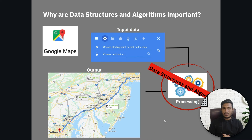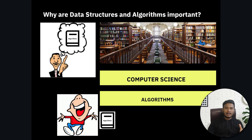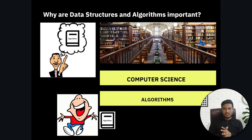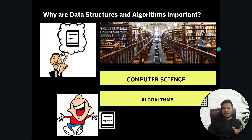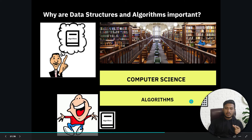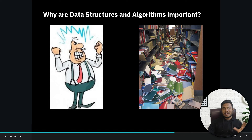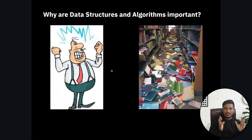Here is another example: a library. Say you want to find a book about algorithms. The library has different sections - biology, physics, chemistry, computer science. You go to the computer science section, then to the algorithm sub-section, and there you find the algorithm book. In this analogy, the books are your data, the organization of books is the data structure, and finding the correct book is the algorithm.